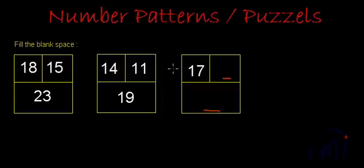We have to find the logical relation between the numbers written in these first two squares, and applying the same logic, we have to fill the empty spaces of the third square.